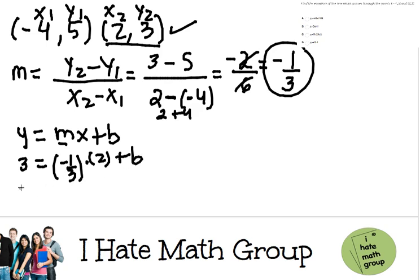Now I'm gonna clean this up and I do multiplication of fractions. 2 times negative 1 is negative 2, 3 times 1 is just 3, plus b. And I want to go ahead and clean this up. I hate fractions. You probably hate fractions too.